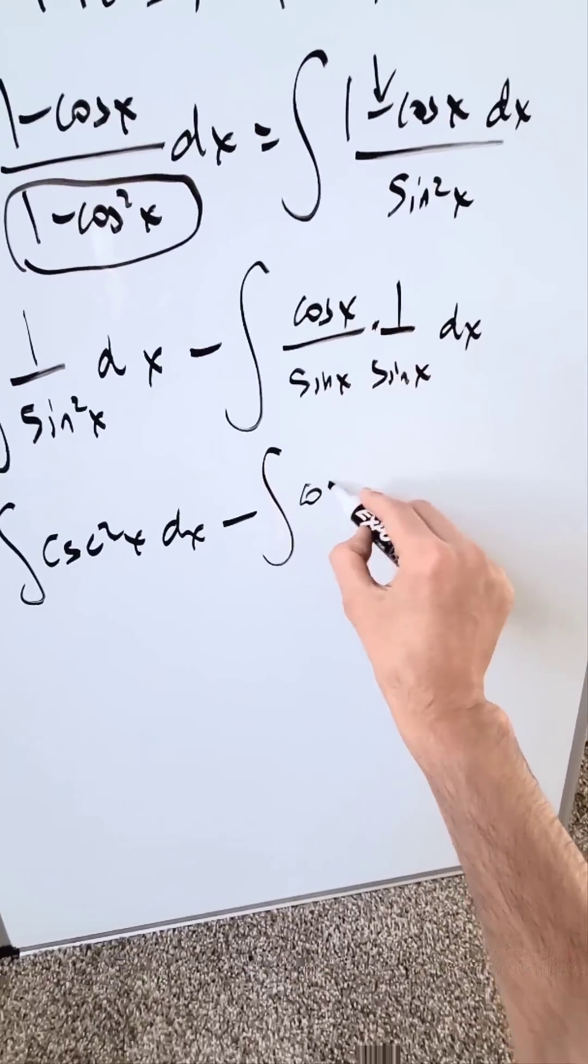Consider this. The derivative of cotangent x is equal to minus cosecant square x. The derivative of cosecant x is equal to minus cosecant x cotangent x. And you see these coming into play over here.